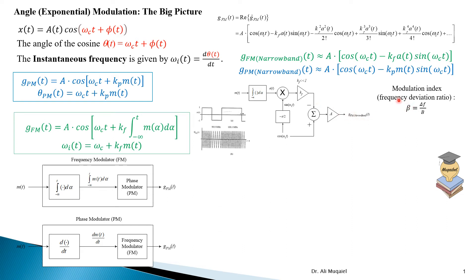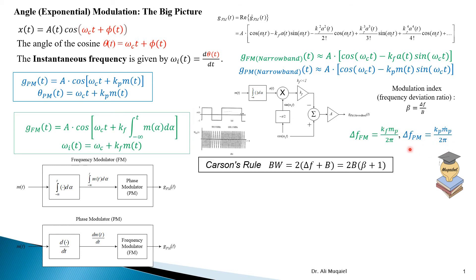We need to start from defining the modulation index, also called the deviation ratio or frequency deviation ratio, beta, which is the ratio between delta F and B. Delta F can be found from how much change occurs in the instantaneous frequency — we divide by 2π to get hertz, and the maximum value gives you delta F. Notice the difference between delta F for frequency and phase: for FM it is proportional to the peak of the message, and for PM it is proportional to the peak of the derivative of the message. Using delta F, we can estimate the bandwidth using BW = 2(delta F + B), or equivalently in terms of beta. This formula is the same for both FM and PM.